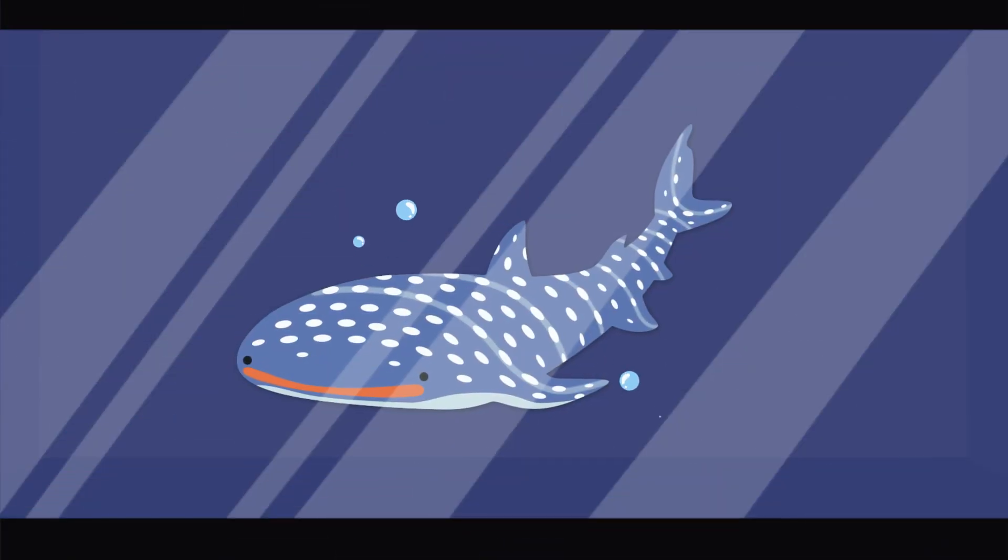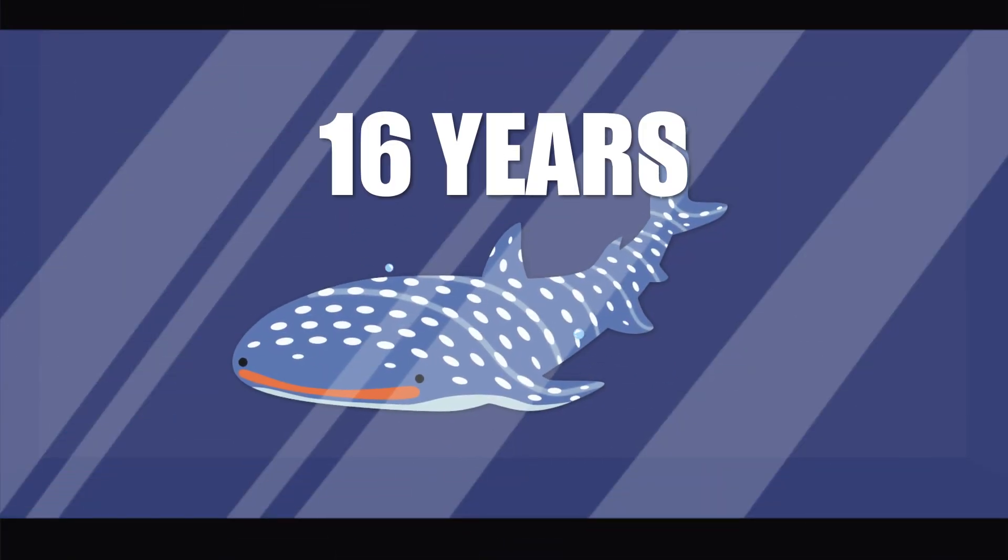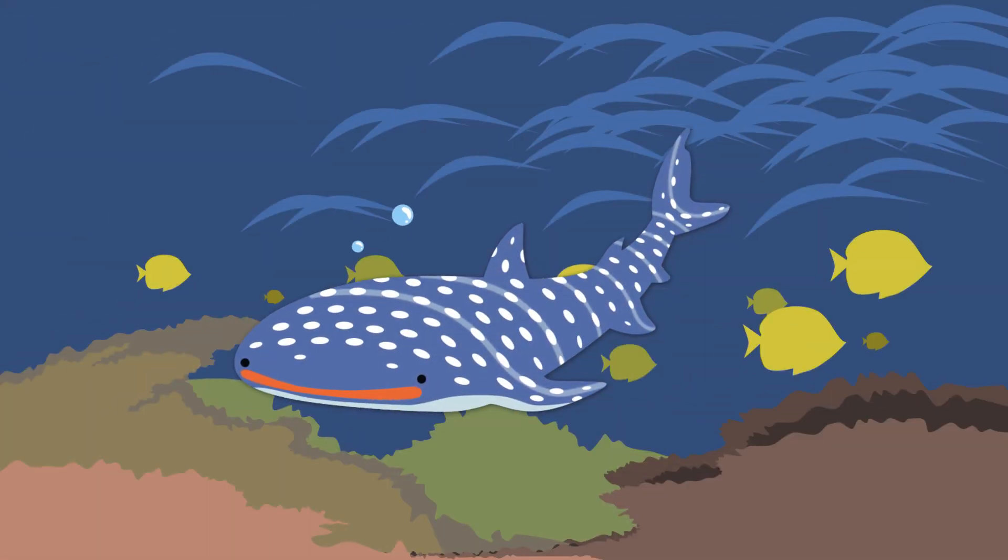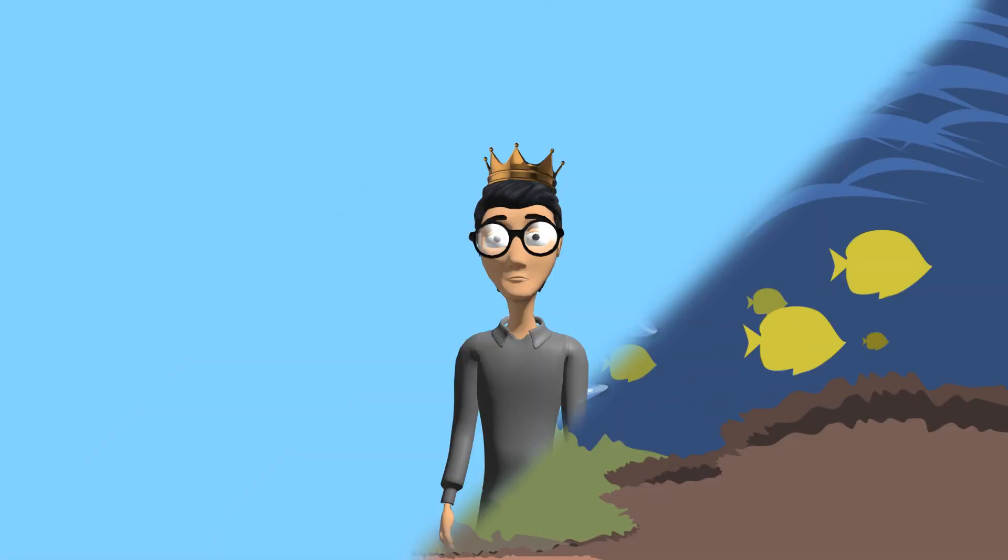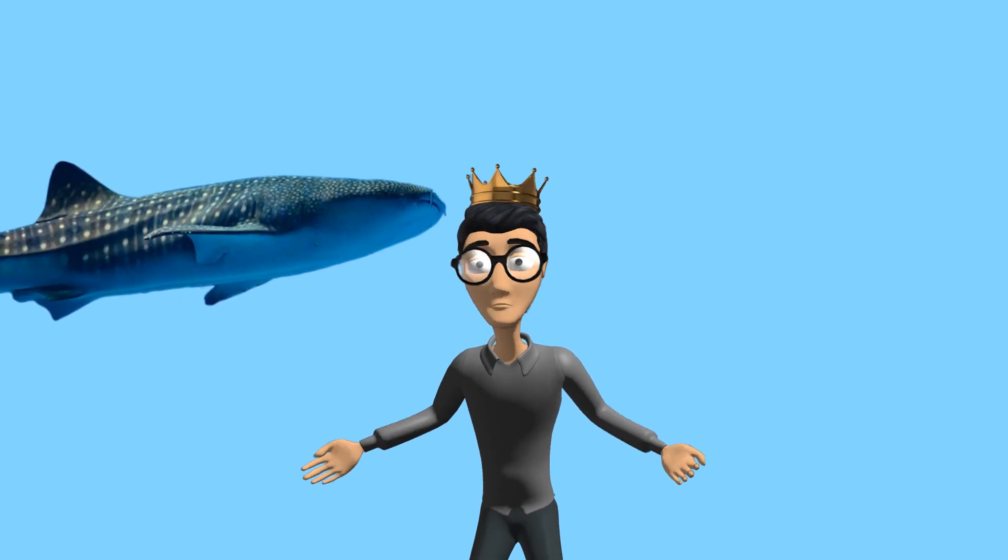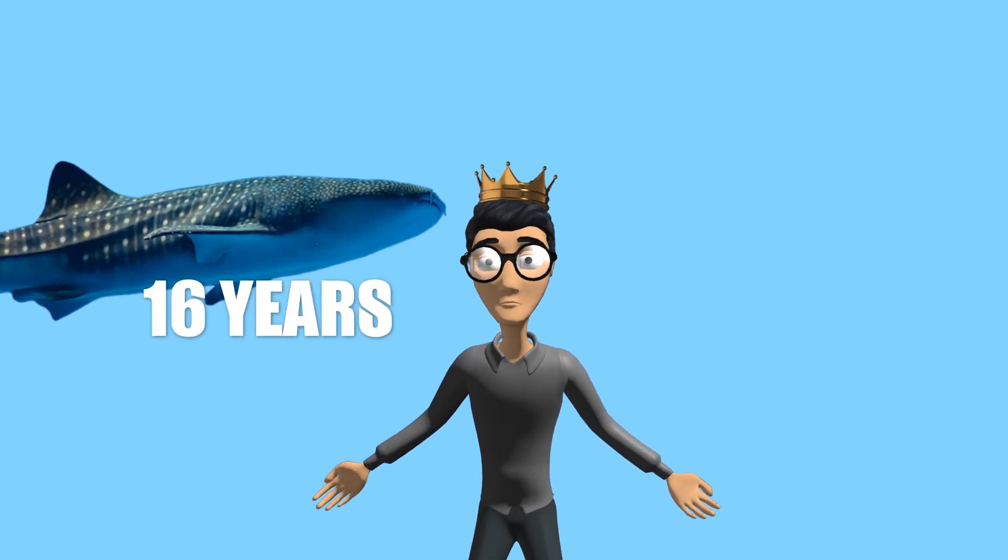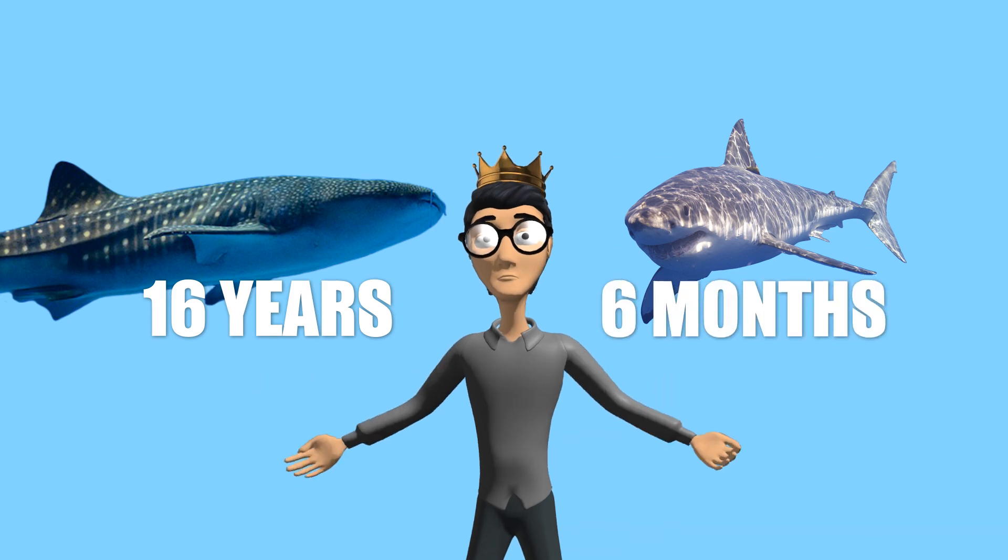The longest one lasted in captivity was 16 years, which sounds impressive until you realize that in the wild, they can live to be over 100. So why is it that we can house the largest fish in the world for 16 years, but we can barely keep a great white for six months?